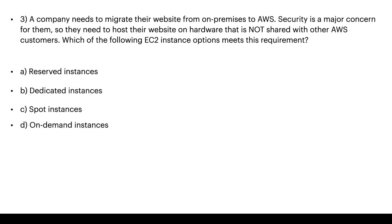The third question: a company needs to migrate their website from on-premise to AWS. Security is a major concern, so they need to host their website on hardware that is not shared with other AWS customers. Which EC2 instance option meets this requirement? A: reserved instance, B: dedicated instance, C: spot instance, or D: on-demand instance.